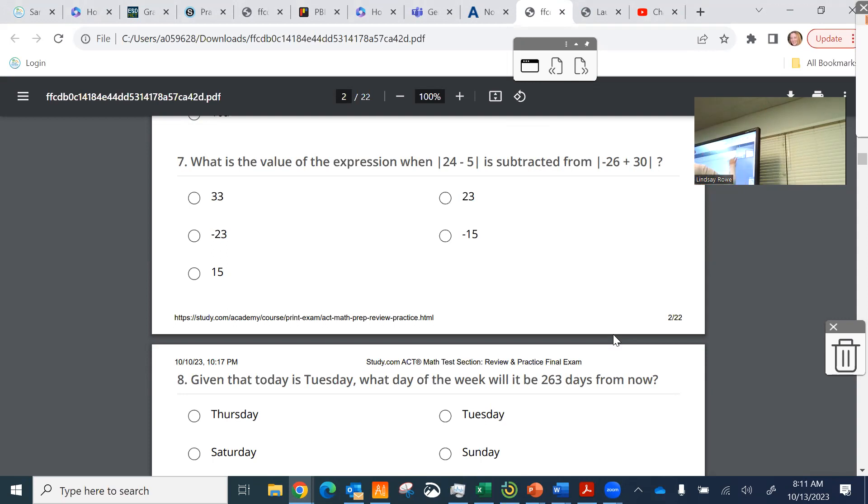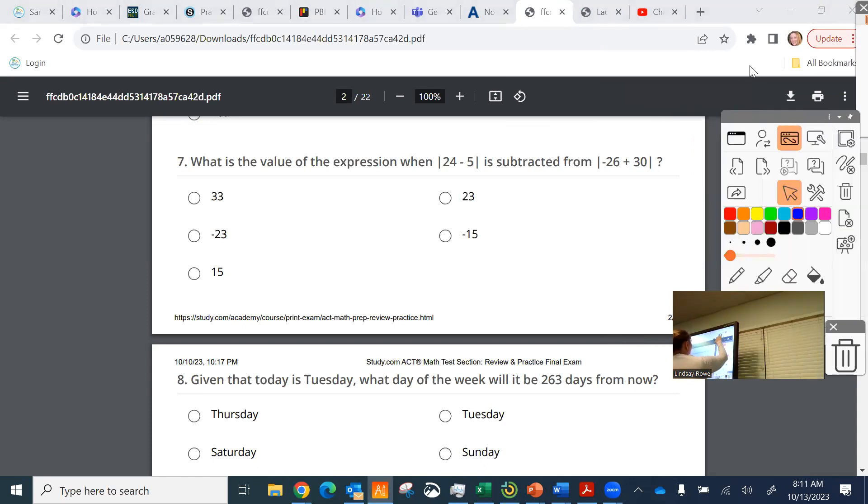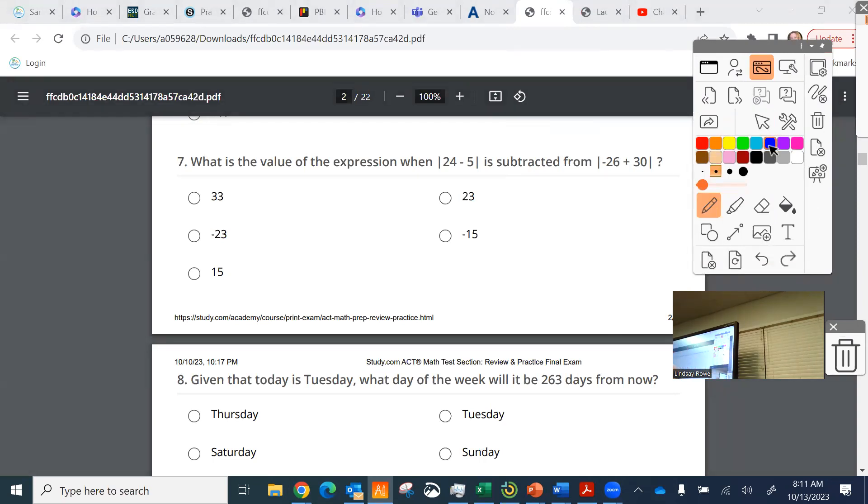what's the value of the expression when 24 minus 5, the absolute value of that, is subtracted from the absolute value of negative 26 plus 30? They ask this in such a stupid way, because you have to kind of rearrange it. You have to put this first, and then subtract this. Okay, so negative 26 plus 30 is 4, right, and the absolute value of 4 is 4 minus the absolute value of 24 minus 5, well that's 19.